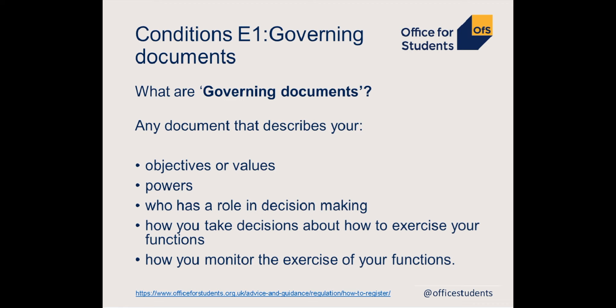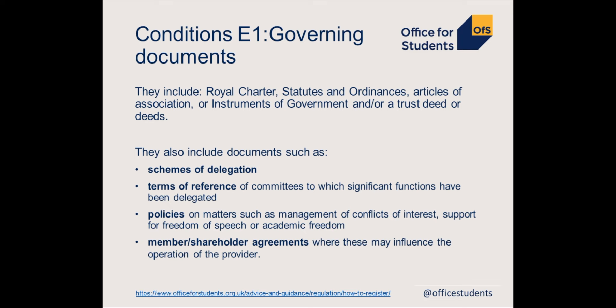The next set of conditions is around good governance. Condition E1 looks at your governing documents. We have a wide view of what should be counted as governing documents: any document that describes your objectives and values, powers, who has a role in your decision-making, how you take decisions about how to exercise your functions, and how you monitor the exercise of your functions. This will vary for different providers and those with different corporate forms. Examples include royal charters, statutes and ordinances, articles of association, instruments of governance or trust deeds, but also schemes of delegation, terms of reference for committees, policies on management of conflicts of interest, and member or shareholder agreements.